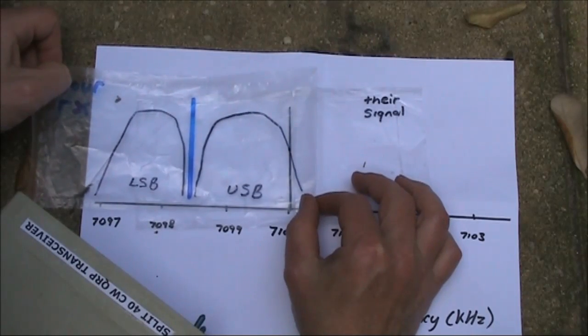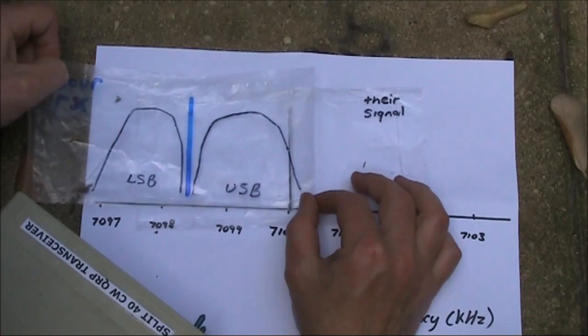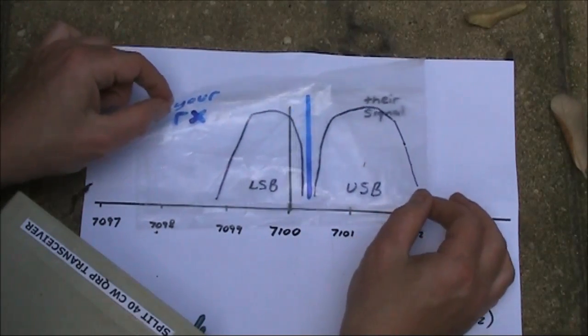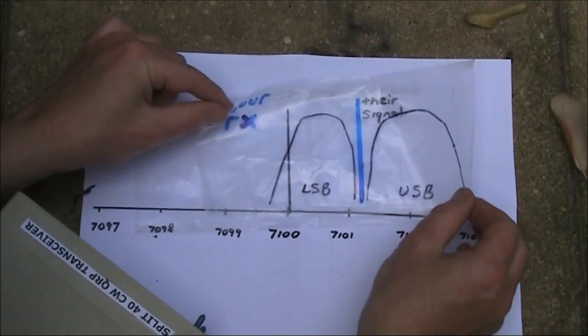You might have noticed that when I tuned across, the pitch of their signal started high, dropped very low down to zero beat, and then went up high again as you tuned across.